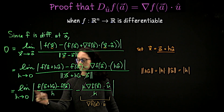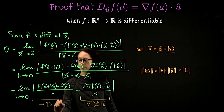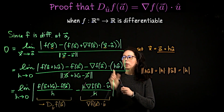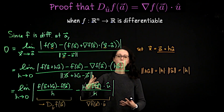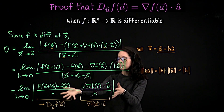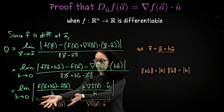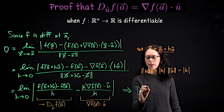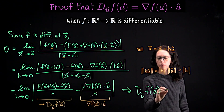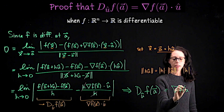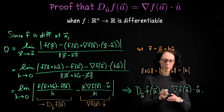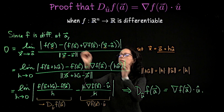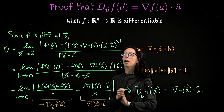We don't need to prove this limit exists — we already know it exists and equals zero because our function was differentiable. So this limit exists and goes to zero, which means the directional derivative of f at a in the direction of u equals the gradient of f at a dot u. That concludes the proof. This dot product formula for the directional derivative comes directly out of this way of characterizing differentiability for a function at a point a.